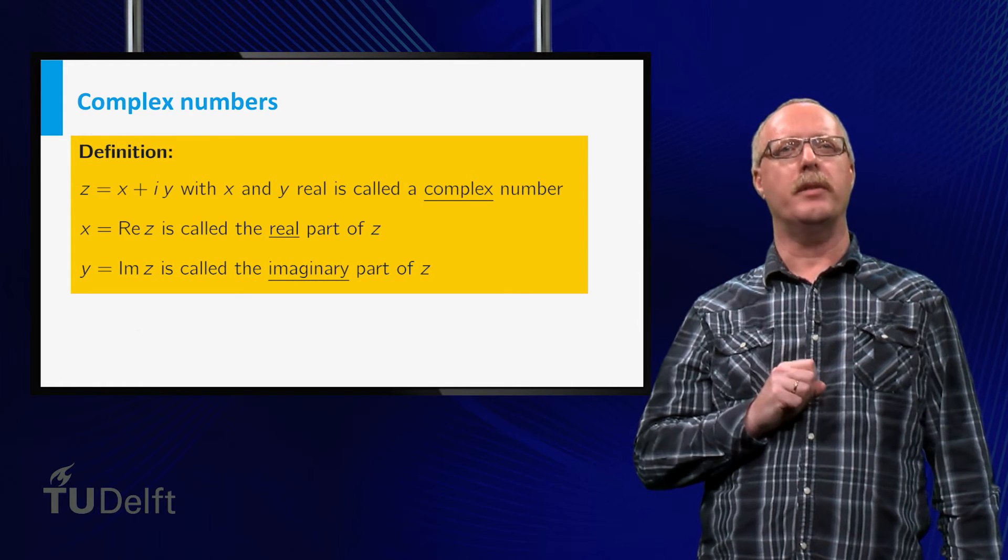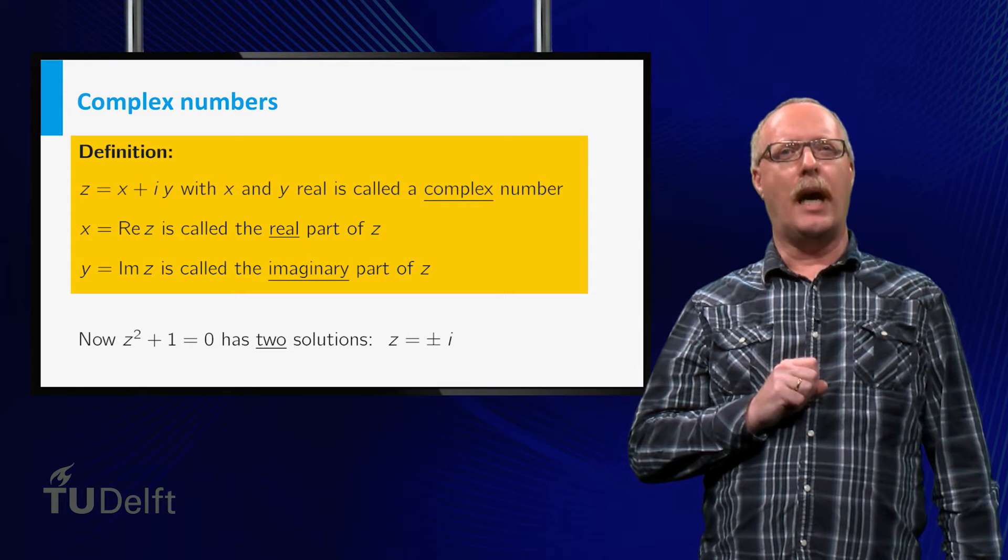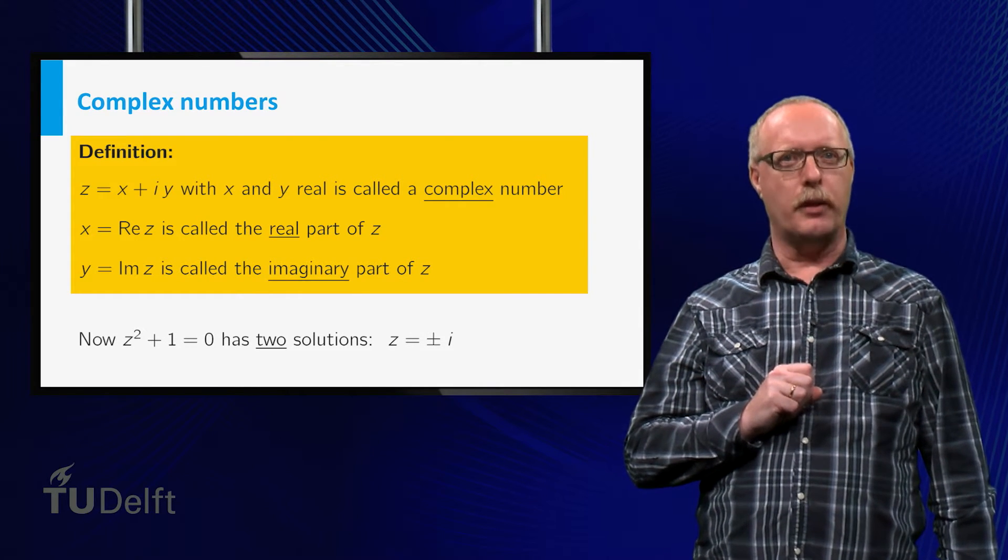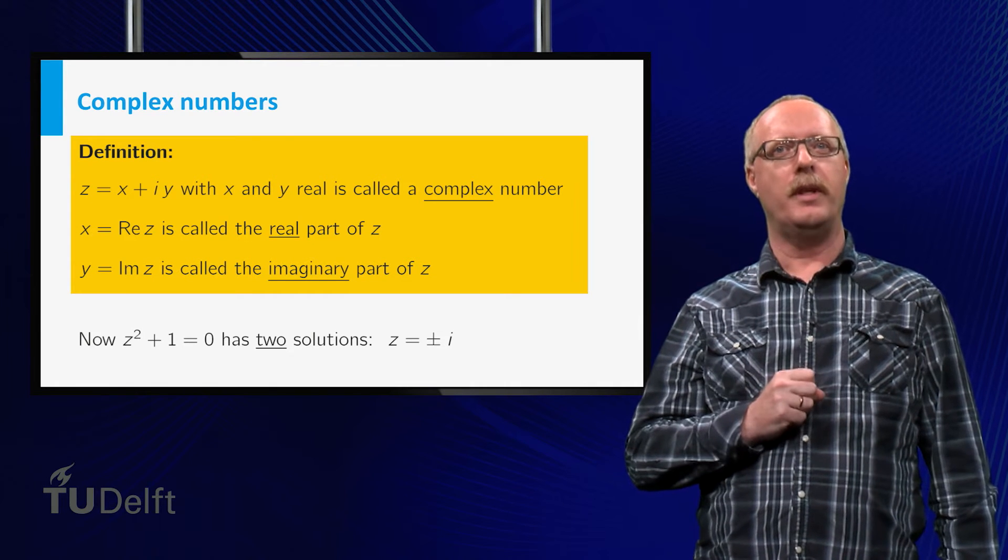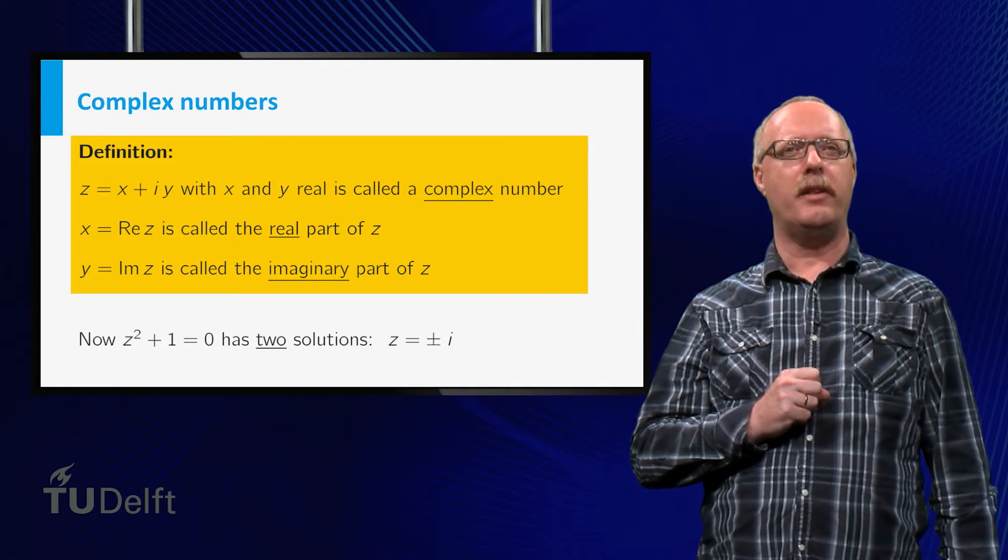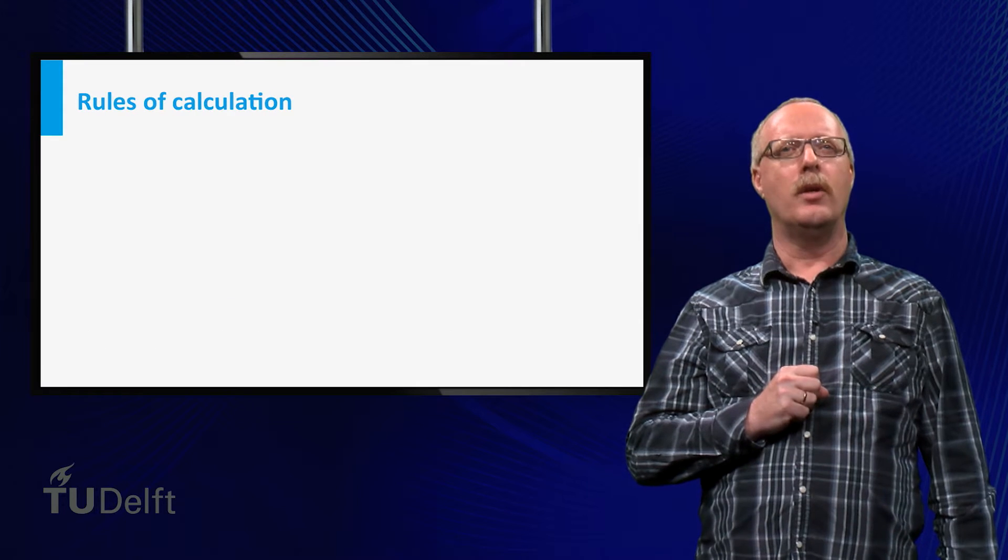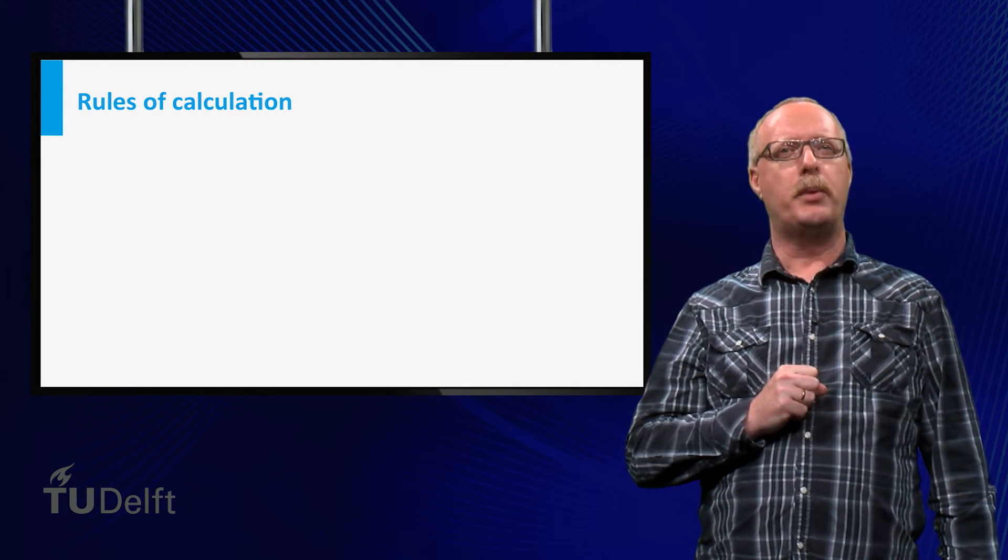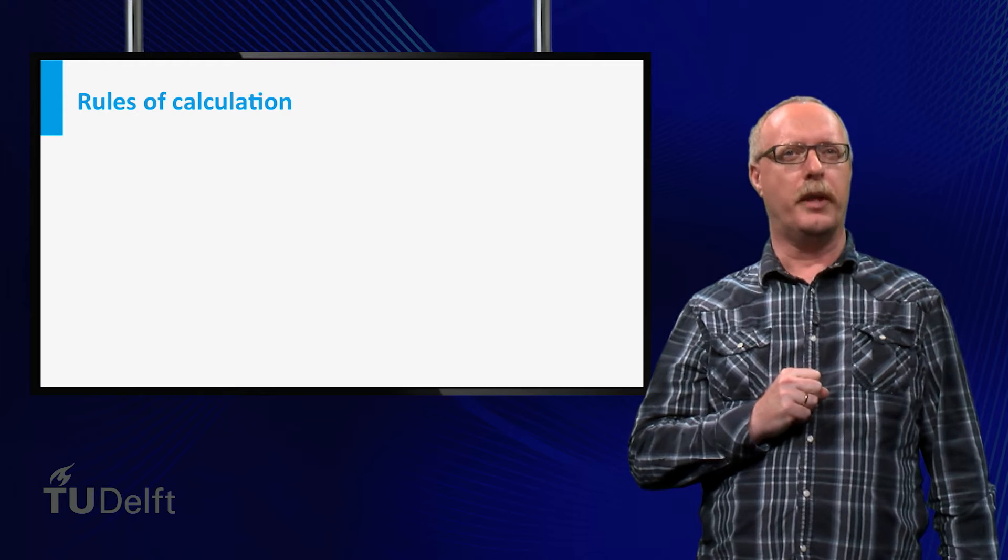Here you see the notations. Now the equation z squared plus 1 equals 0 has two solutions, z is plus or minus i. Surprisingly, we can compute with complex numbers just as with real numbers.